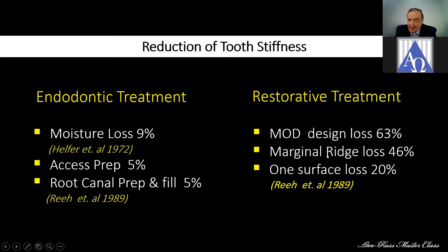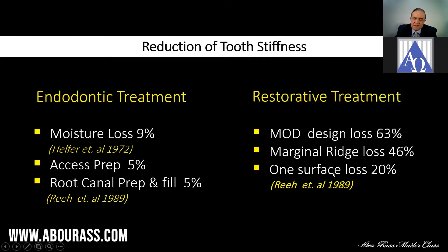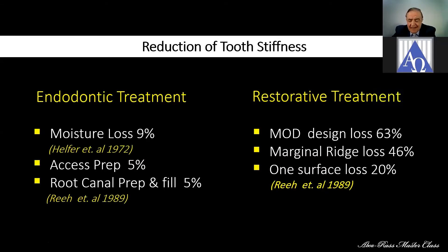Marginal ridge loss — when you lose the margin — is 46%. And one-surface tooth loss is 20%. So you see, it's multifactorial, and you'll see a lot of implications for that. Endodontics is not as damaging to tooth strength as restorative procedures.